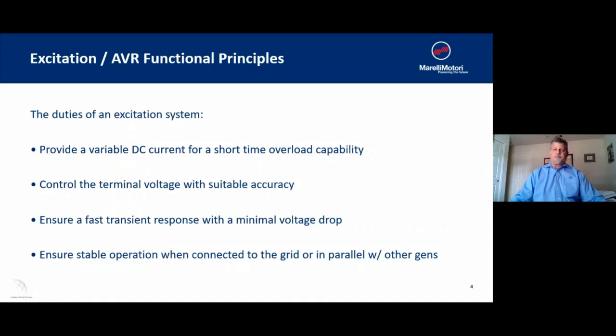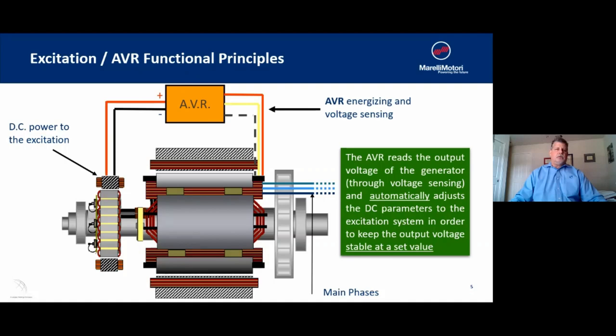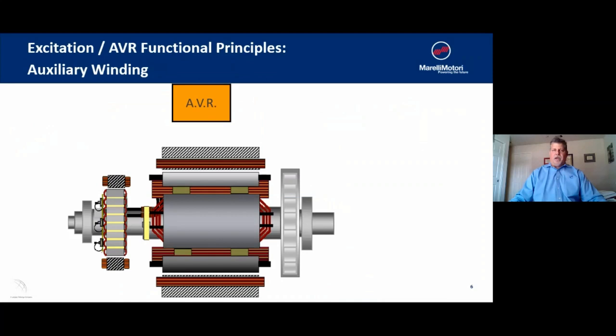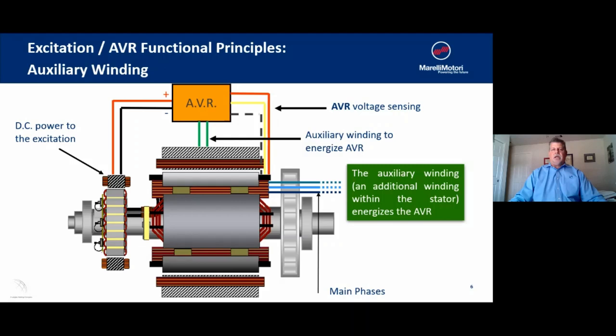Taking a look at how an AVR works: we have a standard system that reads the output voltage of the generator through a voltage sensing device and automatically adjusts that signal to the excitation system in order to keep the output voltage stable at a predetermined value. One of the ways Morelli looks at improving motor starting and voltage drop is we use an auxiliary winding — an additional winding embedded in the stator that sends a signal directly to the AVR to give it a more powerful signal, resulting in better motor starting and better voltage drop characteristics.